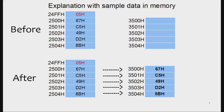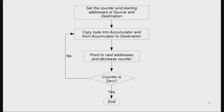After we run the program, the output will look somewhat like this. This is the explanation with sample data in memory. 24FFH contains 05, meaning we have to transfer five bytes starting from 2500H onwards to destination 3500H onwards. After running the program, all data bytes are copied to the location starting 3500H.